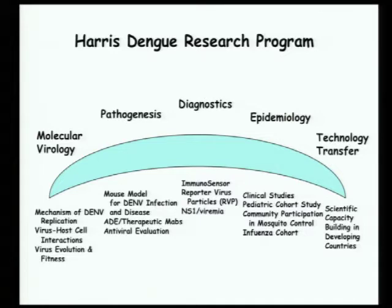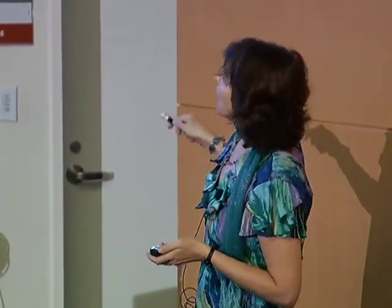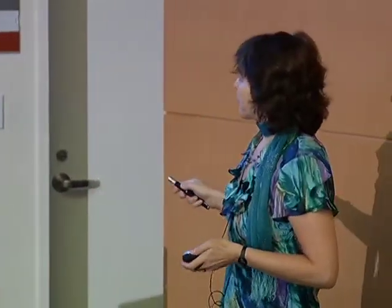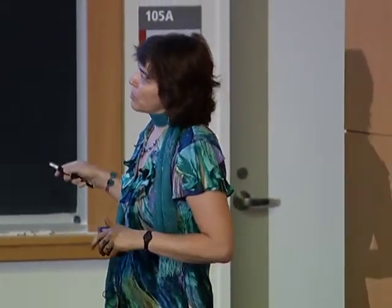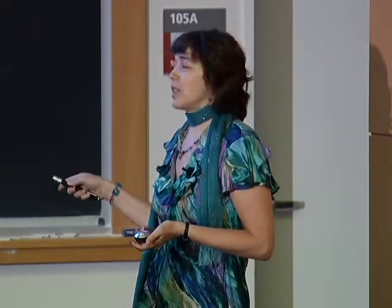We have a section of the lab that works on molecular virology, a section on pathogenesis and immunology using a mouse model we've developed — which is also allowing us to understand antivirals and come up with potential cures — and then a 25-year collaboration with Nicaragua. We have hospital-based studies, a long-term pediatric cohort study based in the community, a randomized controlled trial trying to stop transmission, and additional work through our nonprofit organization, the Sustainable Sciences Institute, devoted to creating scientific capacity in developing countries.